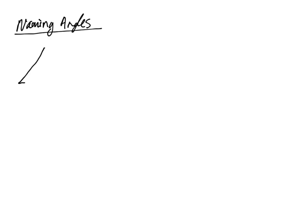There are many different ways that we can name an angle. Typically, we'll name an angle with three points. So let's call this A, B, and C. We could call this angle ABC, as long as the B point — which is the vertex — is in between A and C.